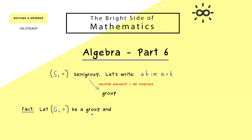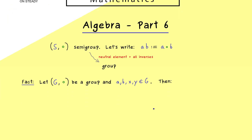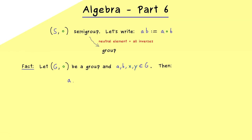We take a general group G and four elements from the group: a, b, x and y. We are able to solve the following two equations. First, ax equals ay, and the conclusion is that we can cancel the a on the left, so that x equals y. This is what we call the left cancellation property — we can simply cancel elements on the left.